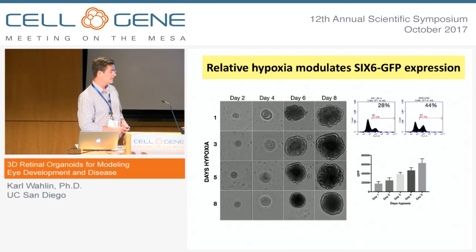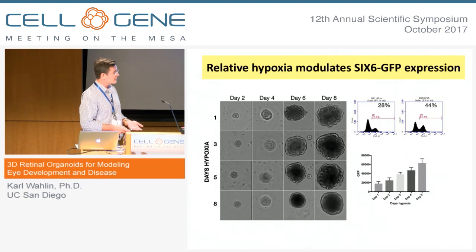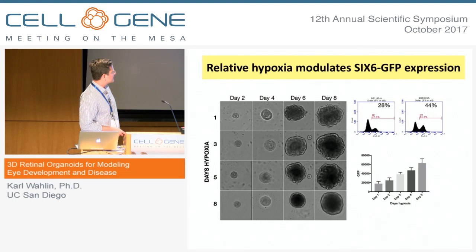We also looked at hypoxia. We often take for granted that the microenvironment in which cells are growing could have a severe impact. Stem cells typically like to grow under hypoxic conditions — less cell death, less stress. We wanted to see whether extending hypoxia increases overall cell vitality and the differentiation process, so we tested one, three, five, and eight days of hypoxia.